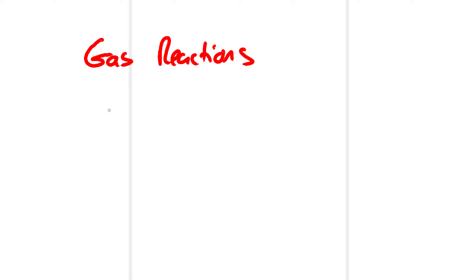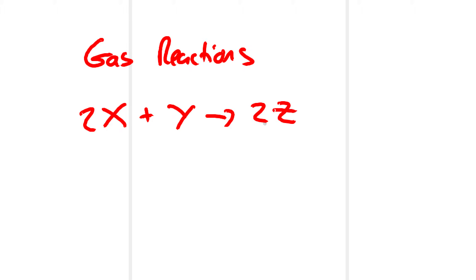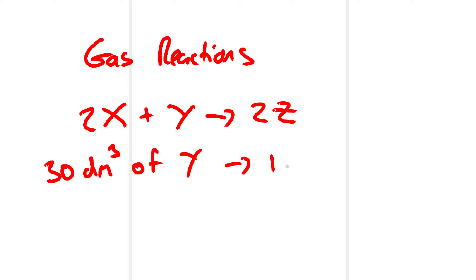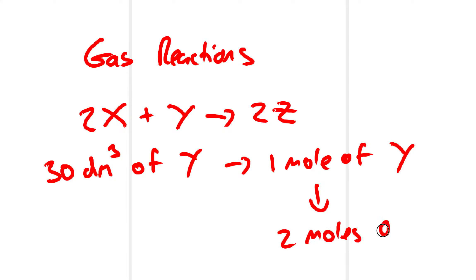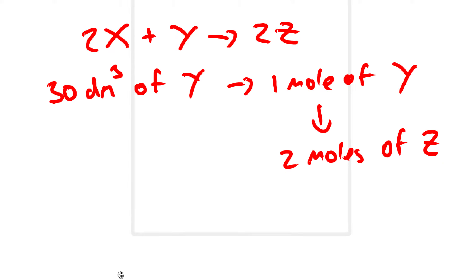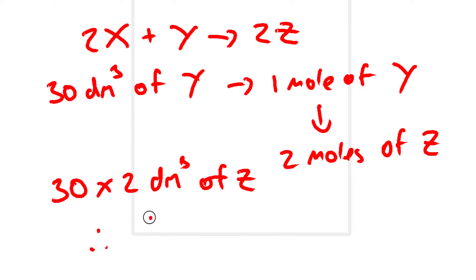For example, let's say you have gas X which has two moles and reacts with gas Y, and that produces two moles of gas Z. If we are given that there is 30 dm³ of gas Y, then in this equation there is one mole of gas Y and this produces two moles of gas Z. Therefore we can double our volume, because one mole is equivalent to 30 dm³, so there is 30 times 2 dm³ of Z — giving us 60 dm³ of gas Z.